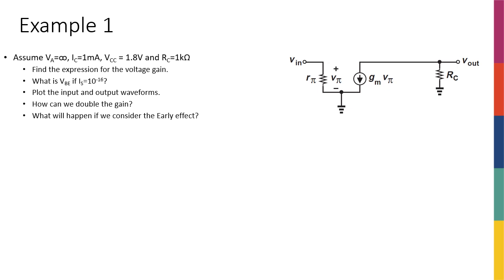Okay, so let's solve our first example. The question is asking us to assume VA is infinity, meaning that no early effect, IC is 1 milliamp, VCC is 1.8 volts, and RC is 1 kilo. We have a common emitter amplifier. So basically we're talking about a circuit that looks like this. We have a V in here, this is RC, this is VCC, and the DC current flowing through the collector is 1 milliamp.